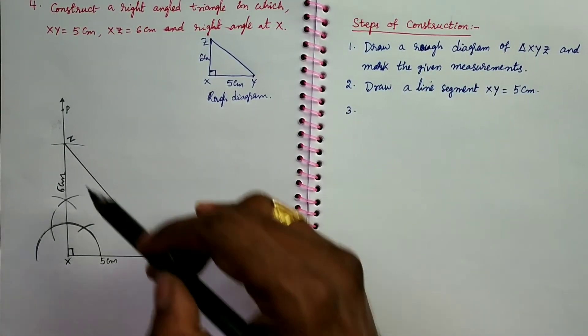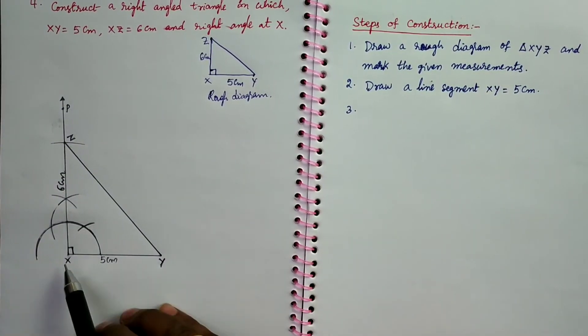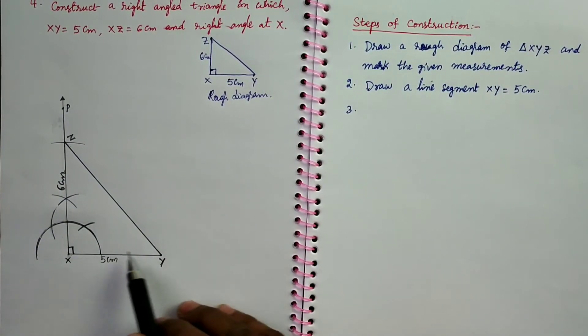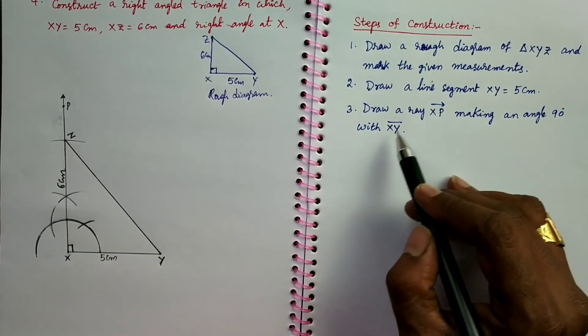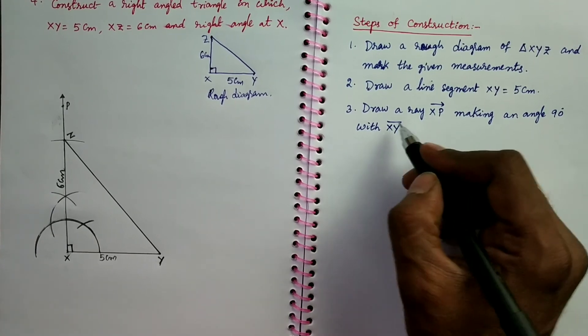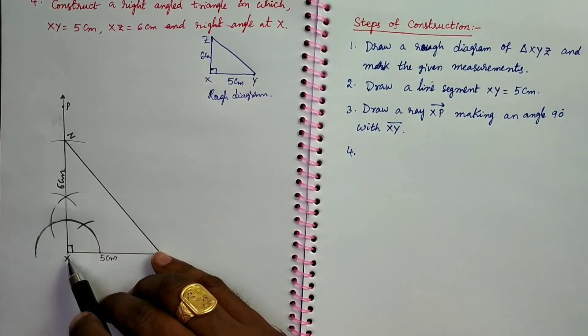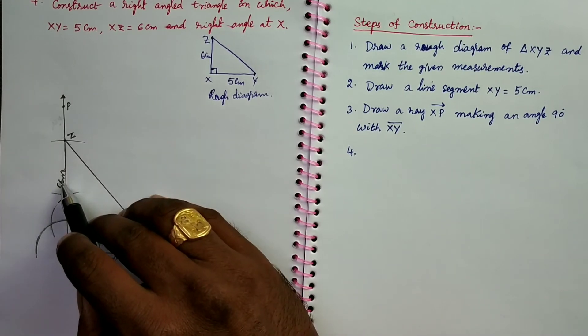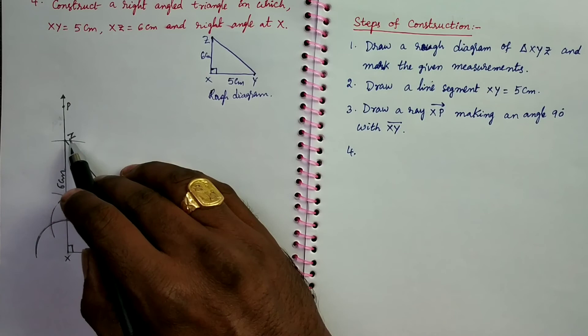Third step is: Draw a ray XP making an angle 90 degrees with XY. This is the symbol of ray. This is the symbol of line segment. Next step is: X as center, 6 cm as radius, draw an arc which cuts the ray XP at Z.